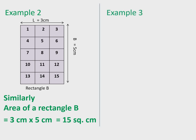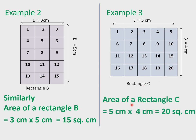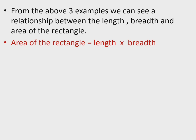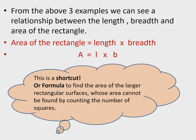In rectangle C there are 5 squares along the length and 4 squares along the breadth. Thus area of rectangle C = 5 cm × 4 cm = 20 square cm. From these three examples we can see a relationship: area of a rectangle = length × breadth. In short, A = length × breadth. This is the shortcut or formula to find the area of larger rectangular surfaces.